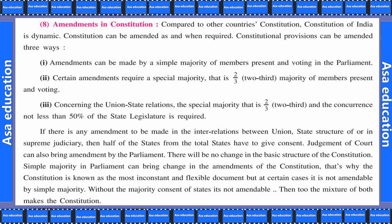Tisra hai — concerning union-state relations, the special majority that is two-thirds and the concurrence of not less than 50% of state legislatures is required. Agar union-state relations ki baat kare toh special majority hai, jo ki do-tihai hai, woh honi zaruri hai. Saath hi jo concurrence hai woh 50% se kam nahi honi chahiye yeh state legislature ki. If there is any amendment to be made in the inter-relations between union-state structure or in supreme judiciary, then half of the states from the total states have to give consent.